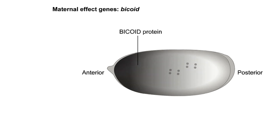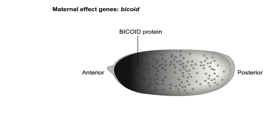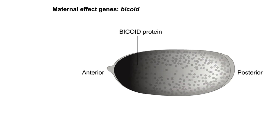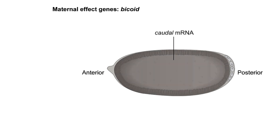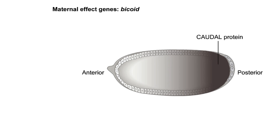The bicoid protein acts as a transcription factor that both activates and represses genes along the anterior-posterior axis of the embryo. In addition, bicoid represses the translation of caudal gene mRNA, leading to a gradient of caudal protein with the highest concentration at the posterior end of the egg. The caudal protein is involved later in the segmentation phase of development to activate genes required for the formation of posterior structures.